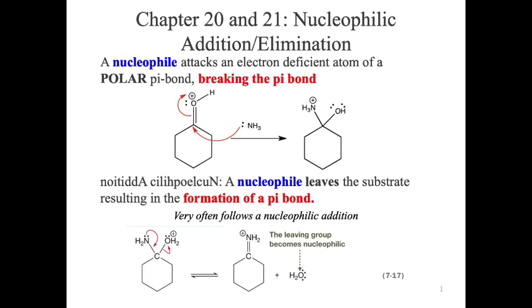Partly it's because of the functional group you're starting with — that's ultimately the big answer. When we're looking at these chapters, what we're typically starting with is still a carbonyl, except now you're going to have a leaving group connected to it. And that's the big change.